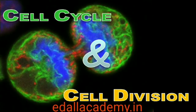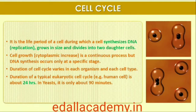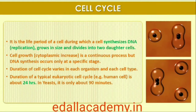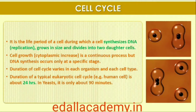Cell division is a very important process in all living organisms. During the division of a cell, DNA replication and cell growth also take place. All these processes — cell division, DNA replication, and cell growth — have to take place in a coordinated way to ensure correct division and formation of progeny cells containing intact genomes. The sequence of events by which a cell duplicates its genome, synthesizes the other constituents of the cell, and eventually divides into two daughter cells is termed the cell cycle.